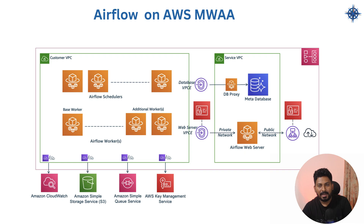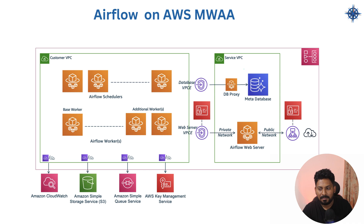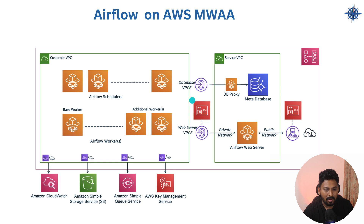For MWAA on AWS, two VPCs are created: a customer VPC and a service VPC managed by AWS. The metadata database and web server are managed by AWS. In your VPC you manage the Airflow schedulers and worker nodes, with auto-scaling configured by setting minimum and maximum values. It's fully managed — ideal if your other services are on AWS, though managed platforms do cost more.